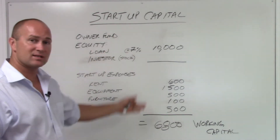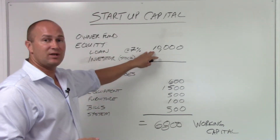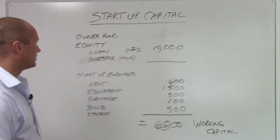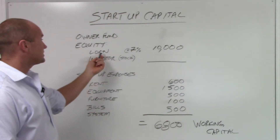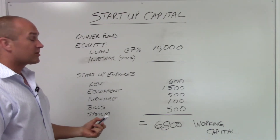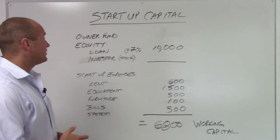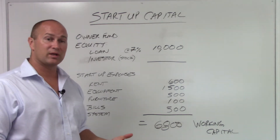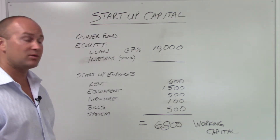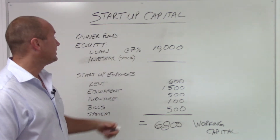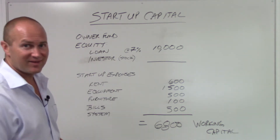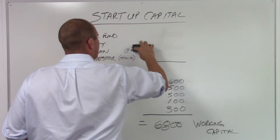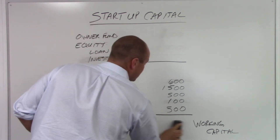You have to look at the numbers and see what amount of money you need to get started and have working capital to keep your business going. A business loan through a bank or credit union is great. If you have parents willing to support you, maybe they'll give you no interest on it. It all depends — taking out a loan is a solid option.